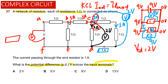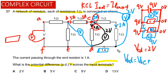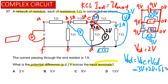If we attach a voltmeter between point B and point D, the reading will equal the voltage across BC plus the voltage across CD. The voltage across BC is equal to 3 volts and voltage across CD is 2 volts, so the voltage across BD is equal to 5 volts.